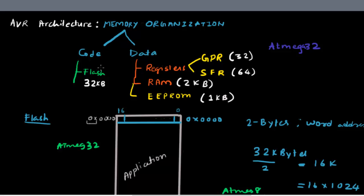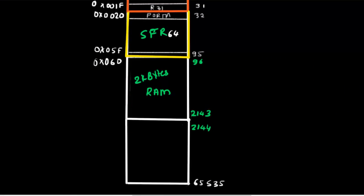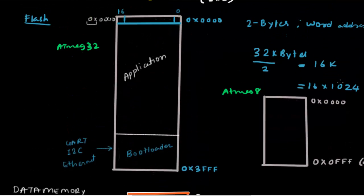In later videos we'll go ahead and discuss the bootloader section of the flash and how it is configured with fuse bits. In the next video we'll look at a concrete example: how to write code, how to set up the tools, and you'll probably be doing your first example. Thank you for watching.